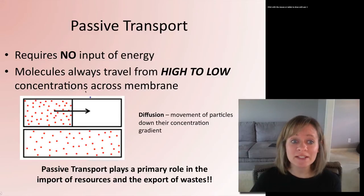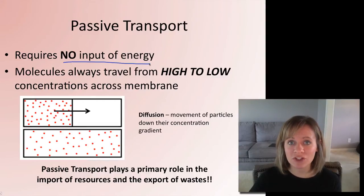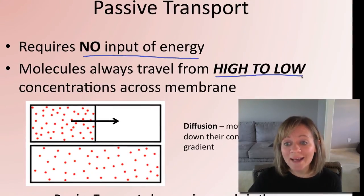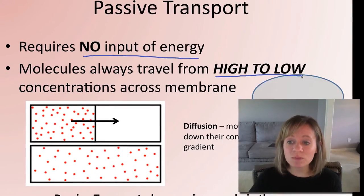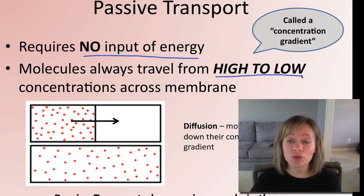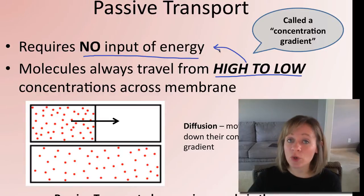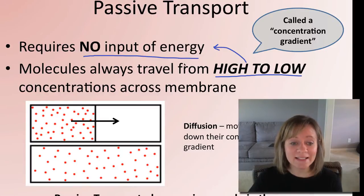Passive transport is called passive for a reason — it requires no input of energy. In passive transport, molecules are always moving from high to low concentration. We call this moving down their concentration gradient. Because it simply happens spontaneously, that's why it requires no input of energy. Let's take a look at an example.